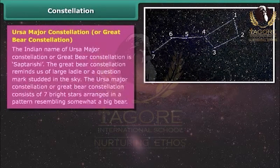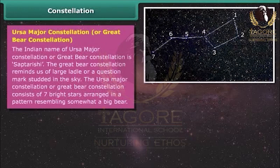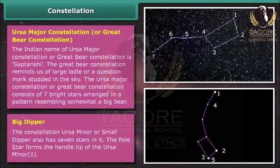The Indian name of Ursa Major Constellation or Great Bear Constellation is Saptarishi. The Great Bear Constellation reminds us of a large ladle or a question mark studded in the sky. It consists of seven bright stars arranged in a pattern resembling a big bear. The Ursa Minor Constellation or small dipper also has seven stars in it. The pole star forms the handle tip of Ursa Major.